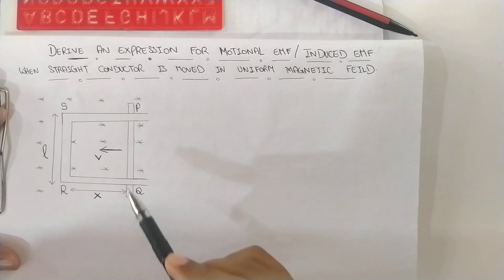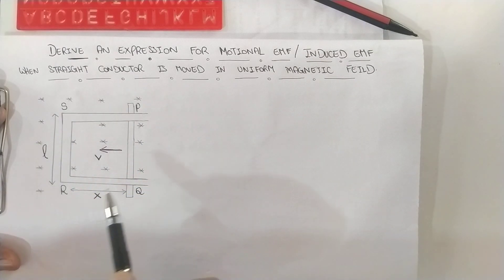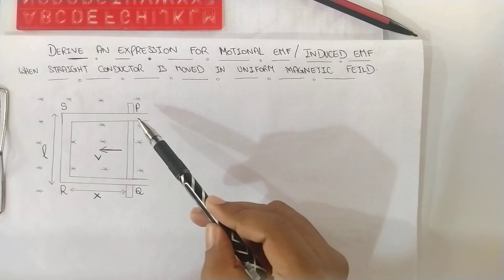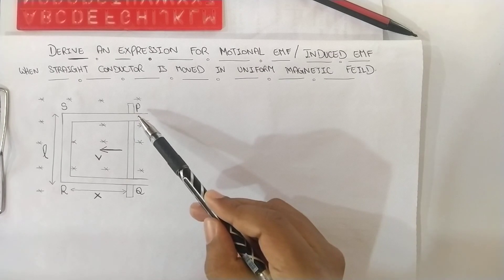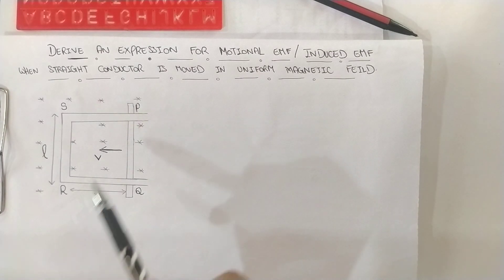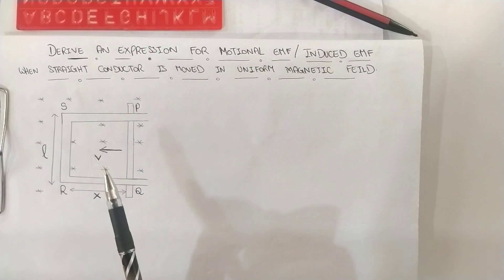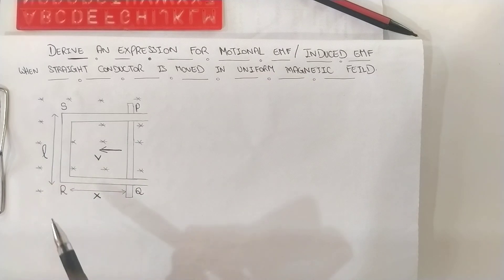Now starting with this derivation, this is the setup for our derivation. We have assumed the rectangular conductor PQRS. As you can see, this is the rectangular conductor in which the arm PQ is movable in this direction with the velocity V.